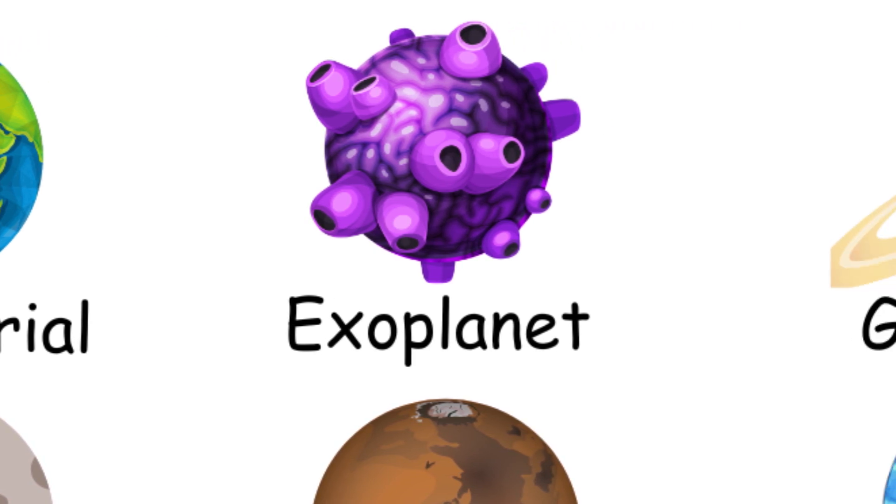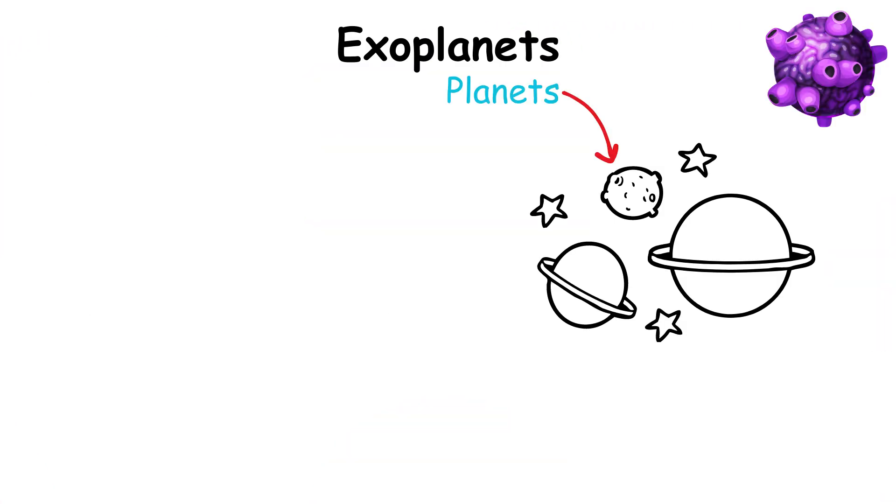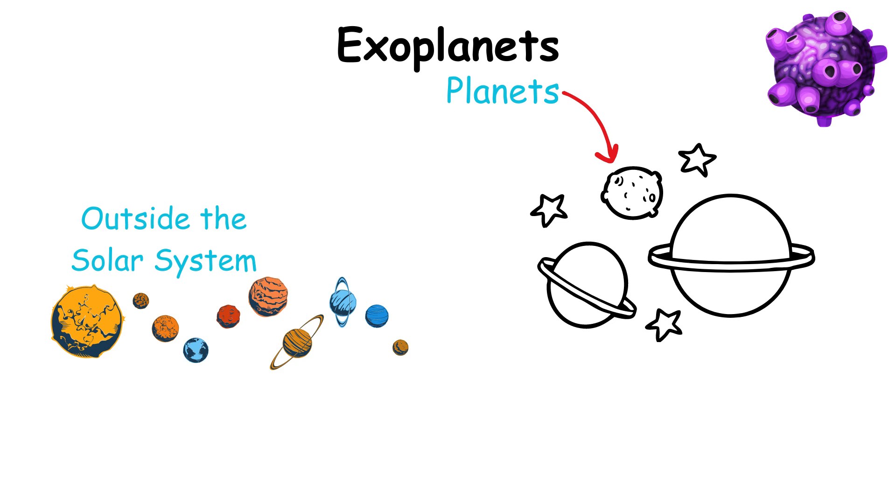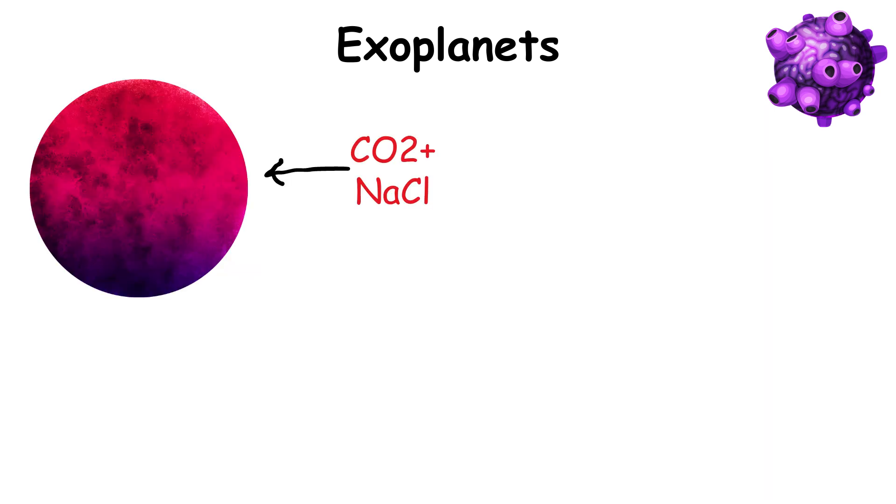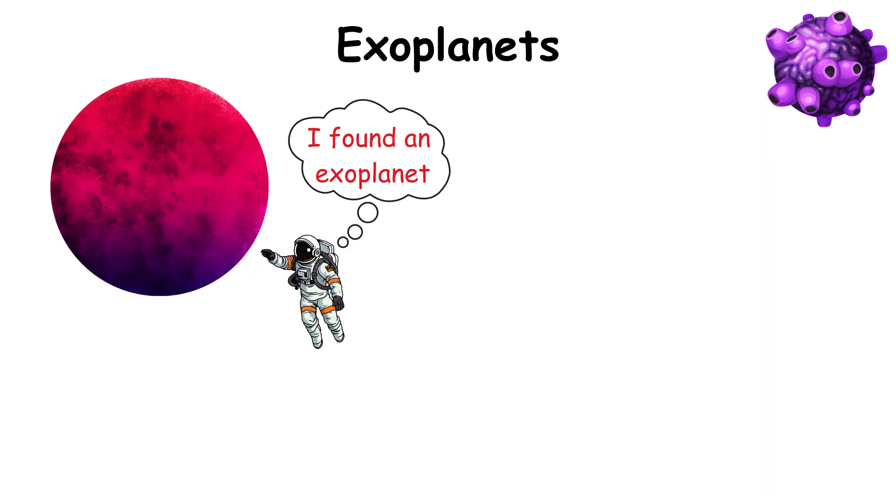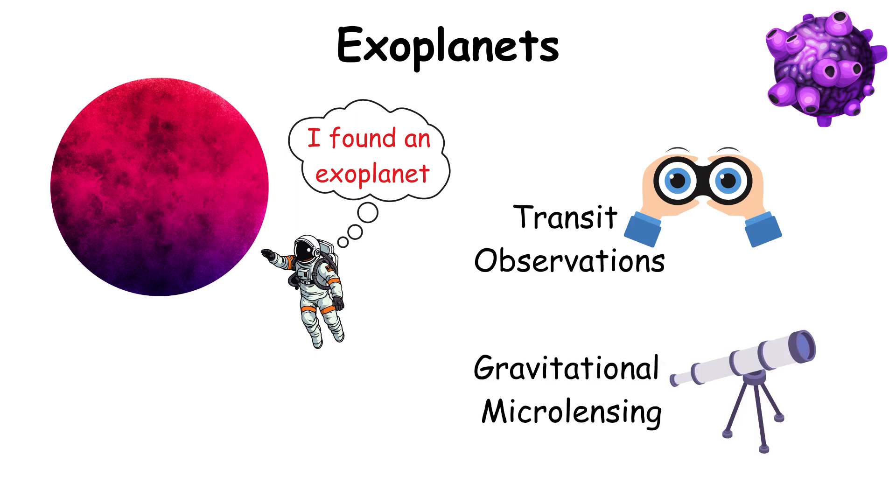Exoplanets are planets that orbit stars outside our Solar System. They can vary widely in composition and size. Exoplanets are discovered through various methods, including transit observations and gravitational microlensing.